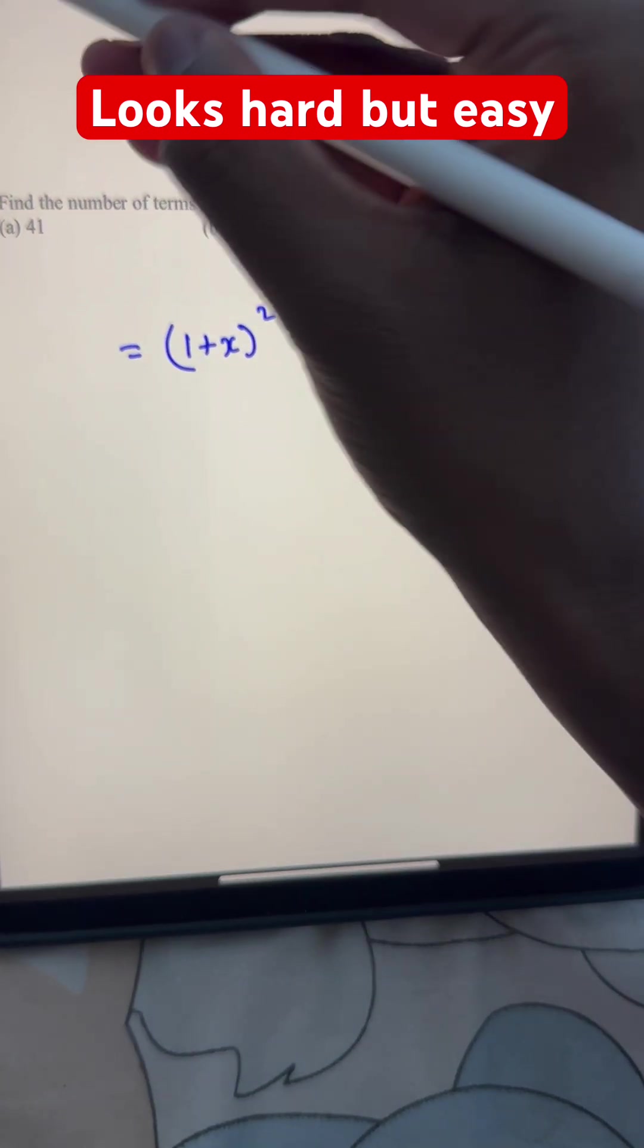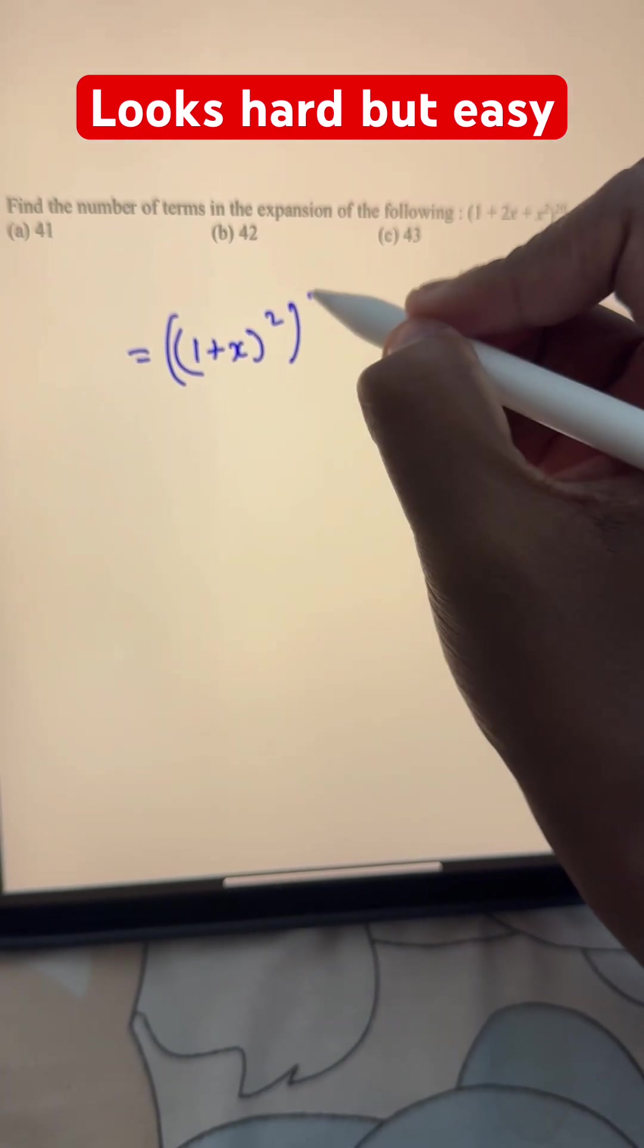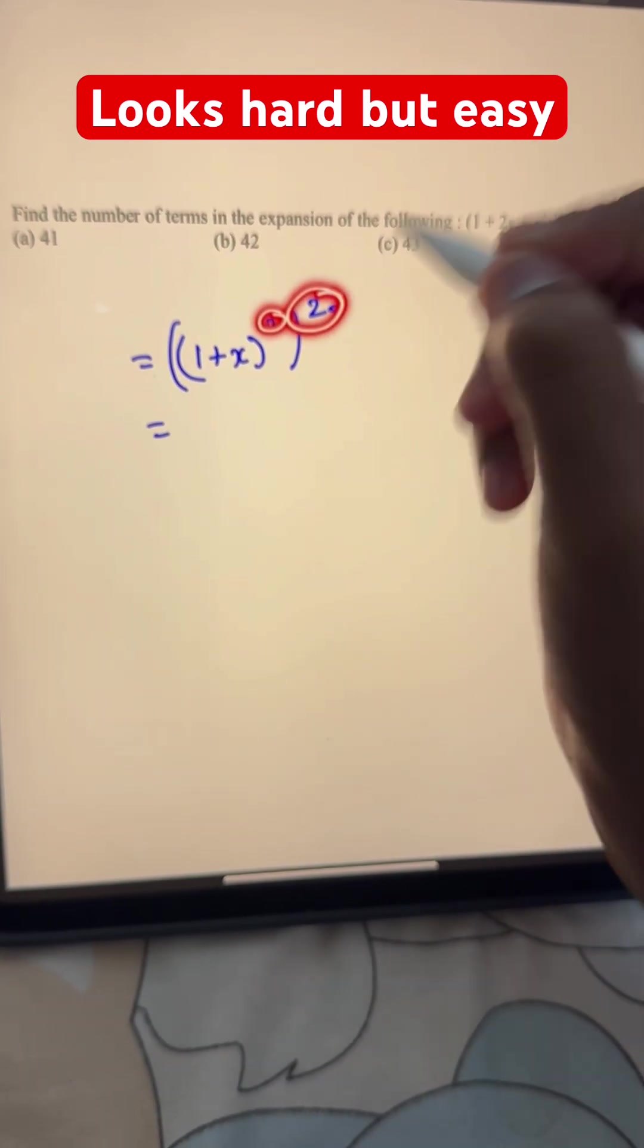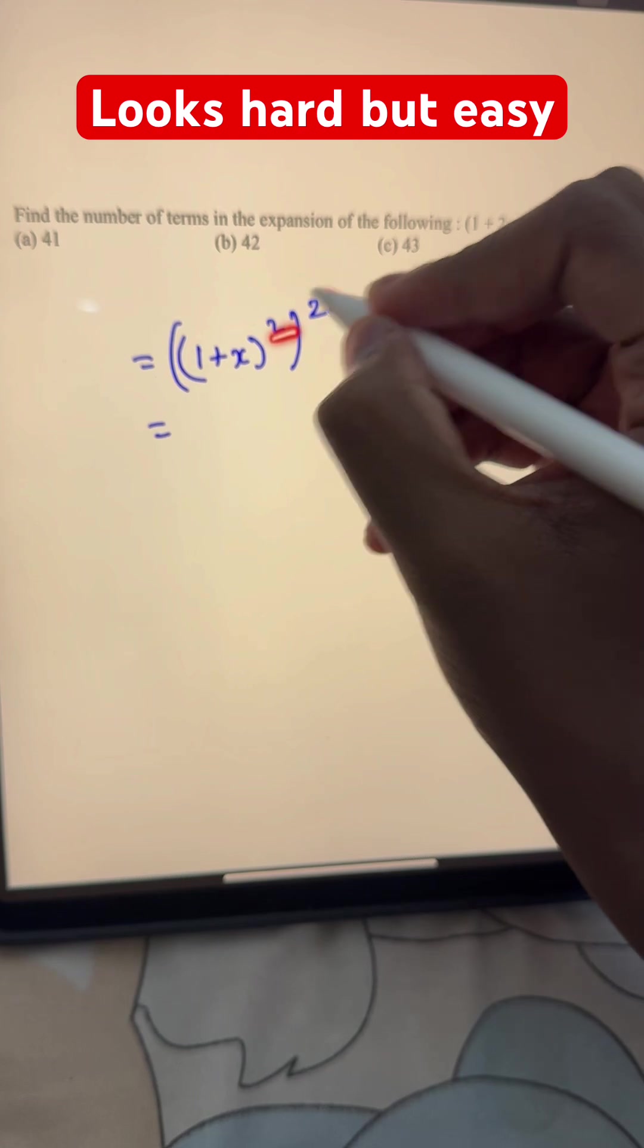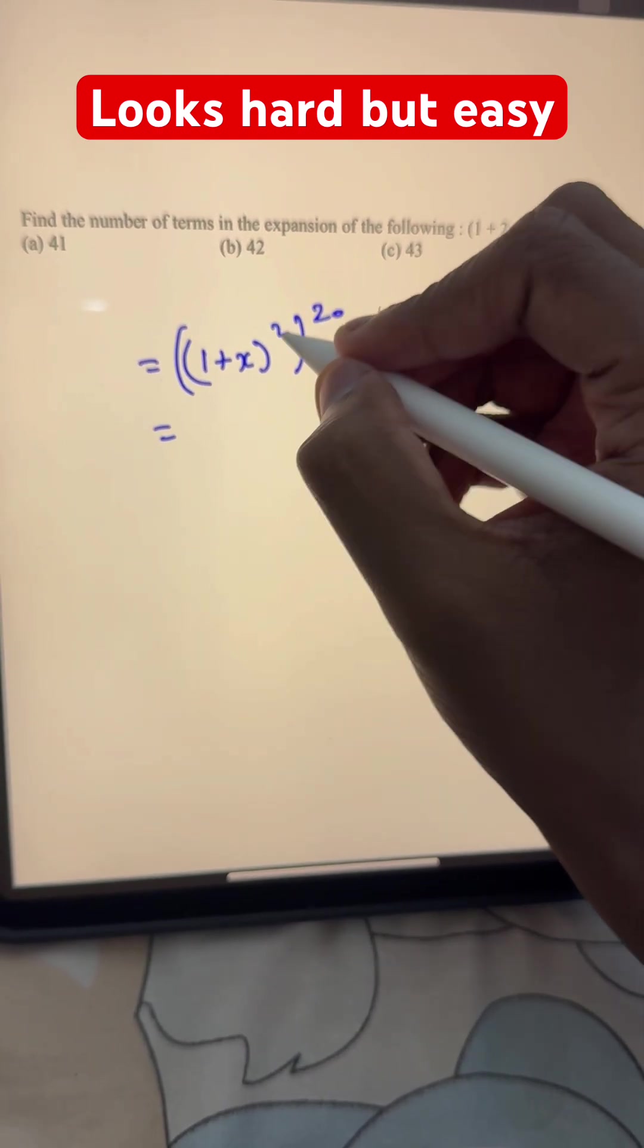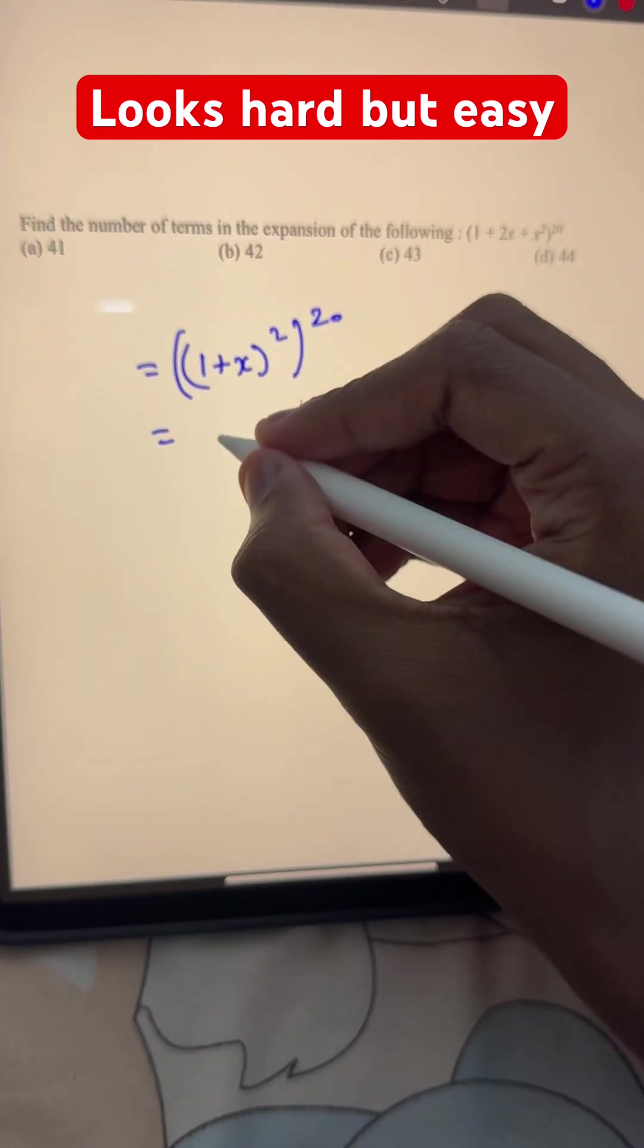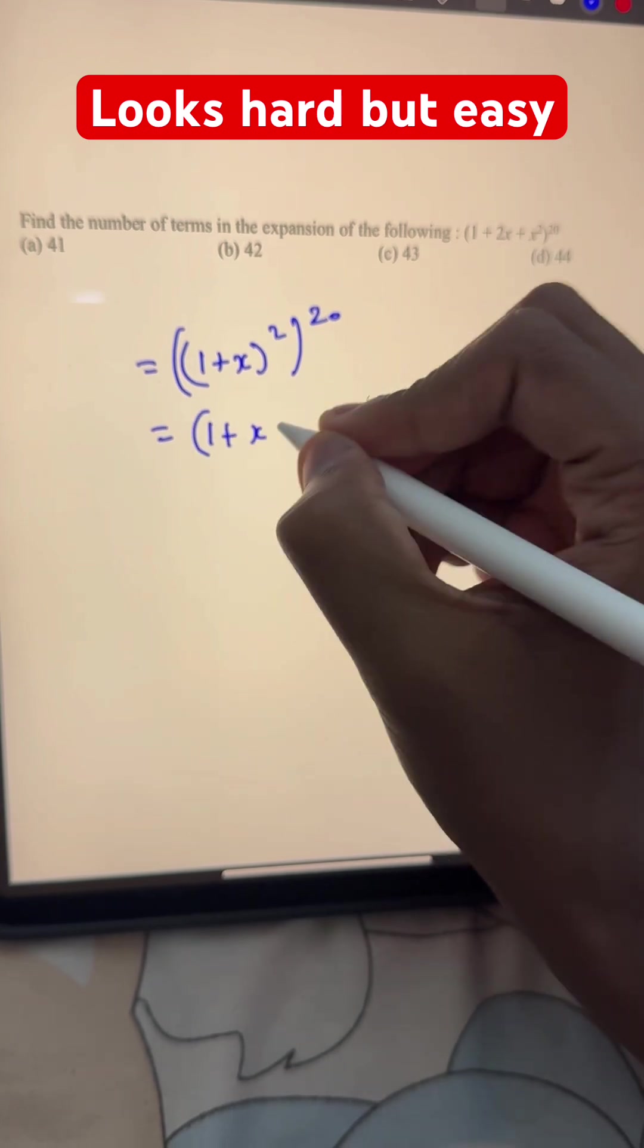And now, we have the exponent of 20 outside, so we write that as well. And now, because we have these two as exponents, exponent to the power of another exponent, we multiply these two powers. So, it's 1 plus x whole to the power of 40.